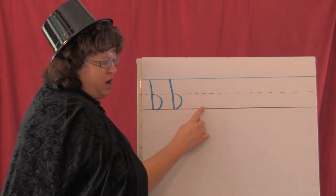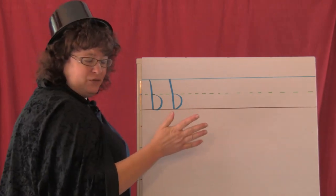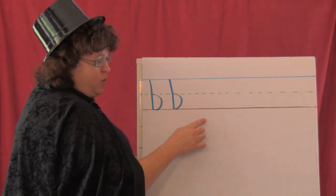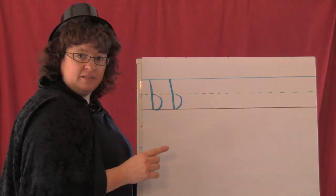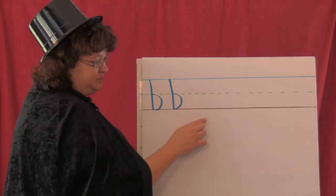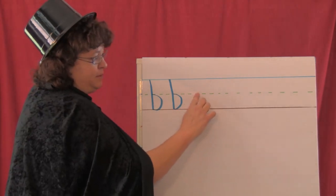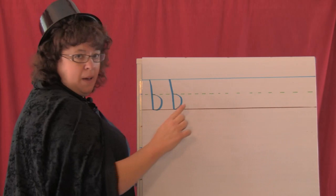We start below the bottom line. That's kind of different, but it's okay. And we're going to say, big line up, little around, p. Let's do it again. Big line up, little around, p. Now let's write it.